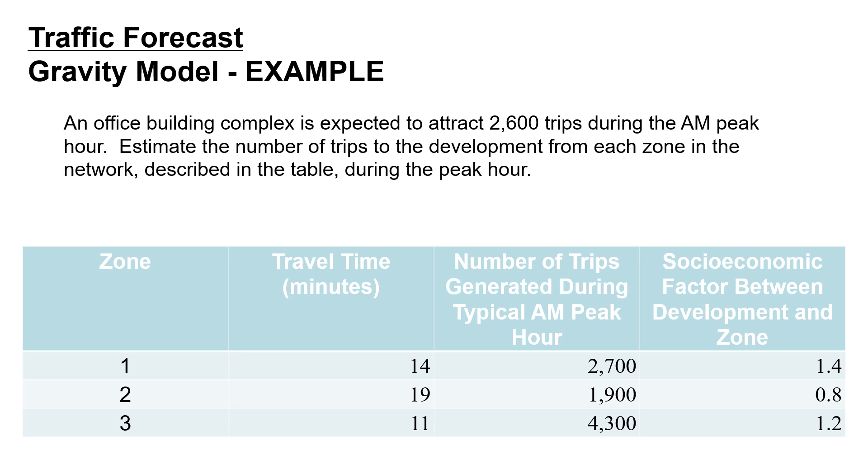We're told that we have an office building complex that's expected to attract 2,600 trips during the morning peak hour. We're asked to estimate the number of trips to this development from each zone shown in the network described in the table below. There are three zones during that peak hour.